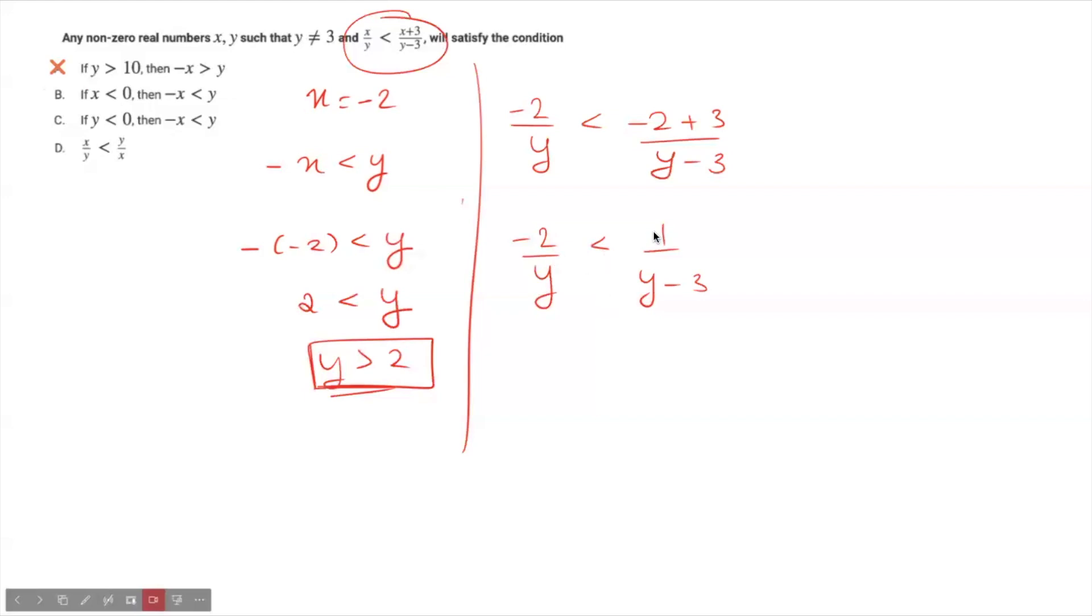Let's cross multiply. We have minus 2 into y minus 3 to be less than y. So, we have minus 2y plus 6 to be less than y. Just add 2y on both sides, means 6 should be less than 3y. 3y greater than 6 or 2 is less than y.